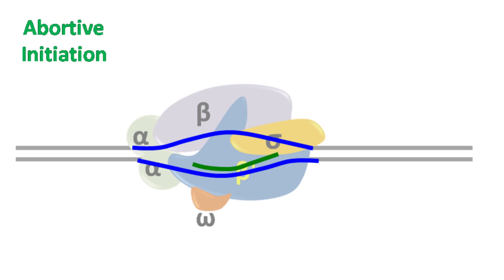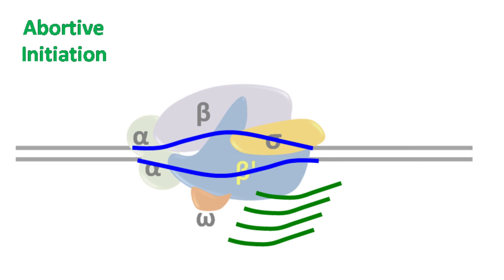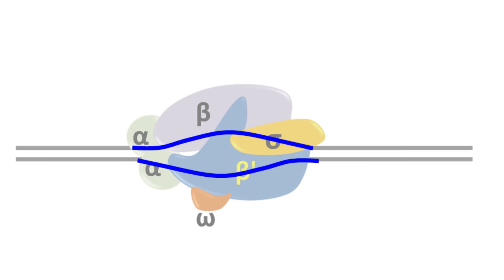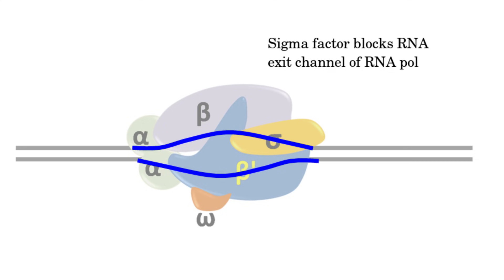Once the short stretches of RNA are formed, the open complex now undergoes the process of abortive initiation. In the abortive initiation process, the RNA polymerase forms short RNA stretches which are released. The abortive initiation occurs because the sigma factor blocks the RNA exit channel of the RNA polymerase enzyme.